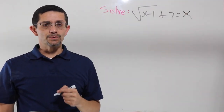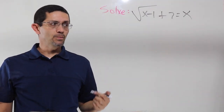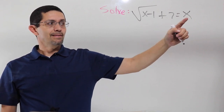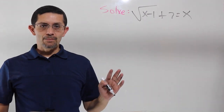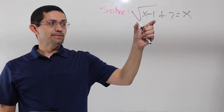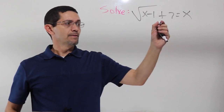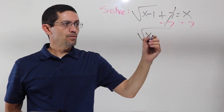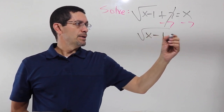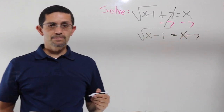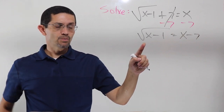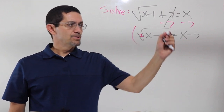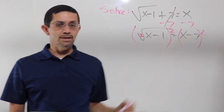Let's work on another one. What's the difference between this one and the other one? Now I have a variable. Before I only had a number. Now I have a variable that's going to change the whole thing. Same idea — my radical needs to be by itself. Get rid of that 7, minus 7, minus 7. Then I have square root of x minus 1 equals x minus 7. To get rid of the square root — remember, I have a tiny 2 that I don't have to write — so I need to raise it to the second power on both sides.